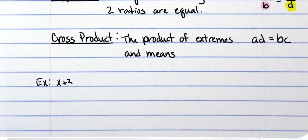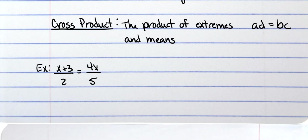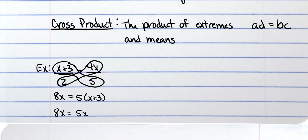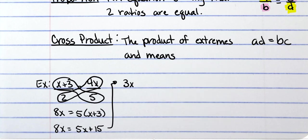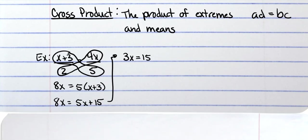We have x plus 3 over 2 equals 4x over 5, and we will cross multiply. So whenever we do that, we go this way—4 times 2 is 8x—cross multiply this way so like this, and then you would distribute that 5, which would give you 5x plus 15. Then you would subtract both sides by 5x, which would give you 3x equals 15. Then divide both sides by 3 and x is 5.